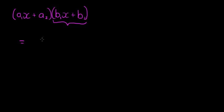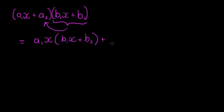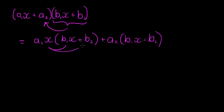It doesn't matter which way you do it around. So let's take A1X times B1X plus B2, plus, and then we distribute it to the second term, giving me A2 times B1X plus B2. Now our next step is to distribute — we're simplifying, so we must distribute everything that is multiplying a bracket.